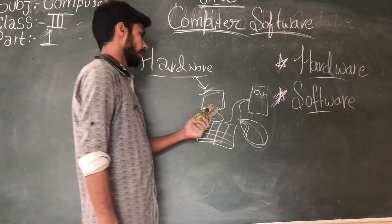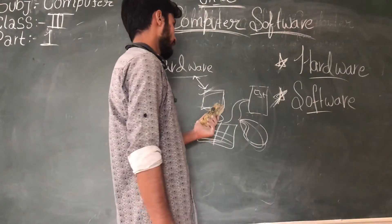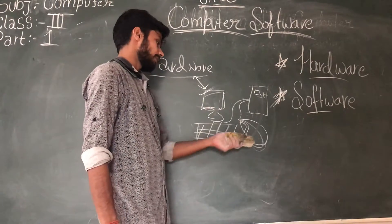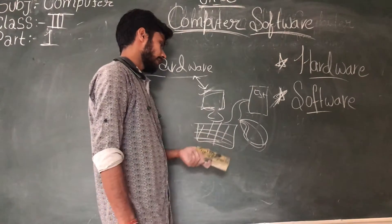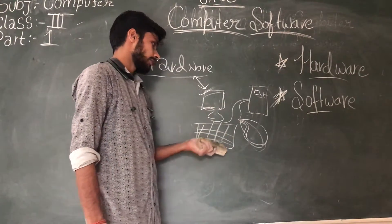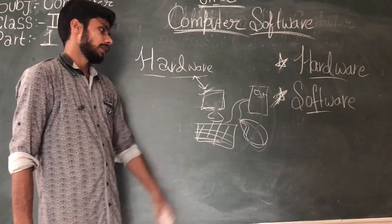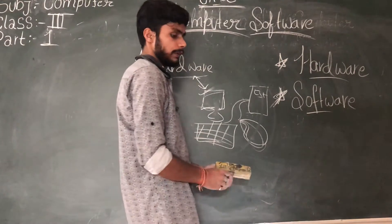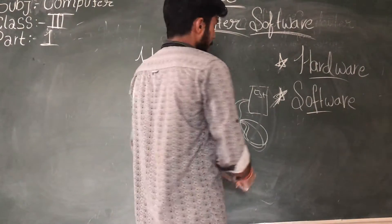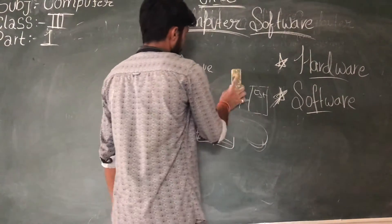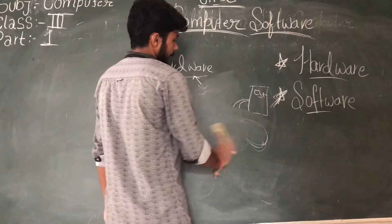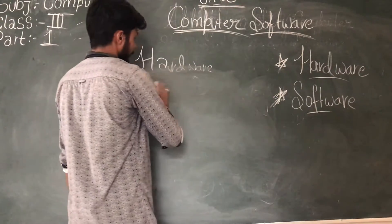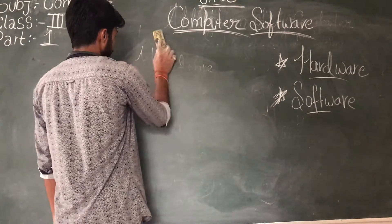If you look at the physical components, you can see the external components of the computer system: monitor, mouse, keyboard, speaker, CPU. These are all hardware. This is an important tool that you use in a computer.